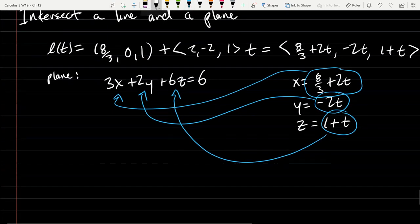And then solve for t. So three times eight-thirds plus two t, plus two times negative two t, plus six times one plus t, equals six.